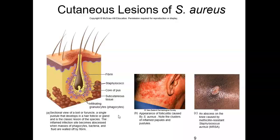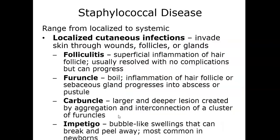Folliculitis is inflammation of the hair follicle, usually very asymptomatic. Furuncles, also known as boils, are where the hair follicle becomes inflamed and can progress into an abscess or pustule. A carbuncle is a much deeper lesion where a bunch of furuncles cluster together and connect, forming a much larger lesion. Impetigo involves bubble-like swelling with yellow crusty scabs that form, and it's very common in young children, especially newborns.